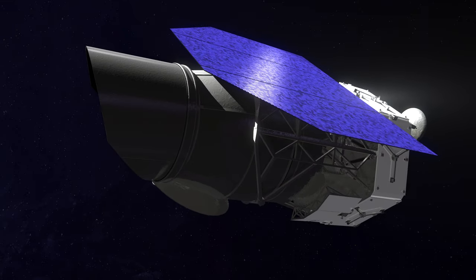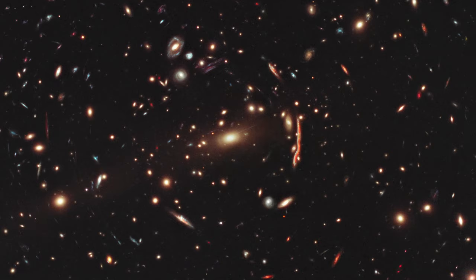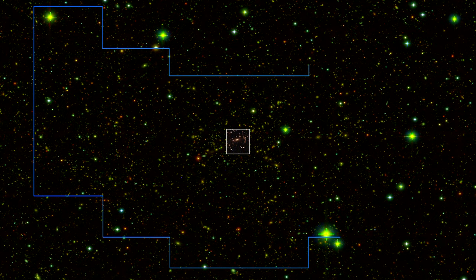The Wide Field Instrument is the heart of WFIRST. It is what allows WFIRST to take pictures with the same detail as Hubble, but covering an area 100 times larger.